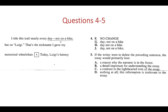Question 5: 'That's the nickname I gave my motorized wheelchair.' If the writer were to delete the preceding sentence — 'preceding' means the sentence before — the essay would primarily lose what? Taking out 'I ride this trail nearly every day, not on a bike, but on Luigi,' this sentence is what tells us who Luigi is — that Luigi is his motorized wheelchair. So you wouldn't lose a reason why the narrator is in the forest; you'd lose a detail important for understanding the essay. B is the correct answer.